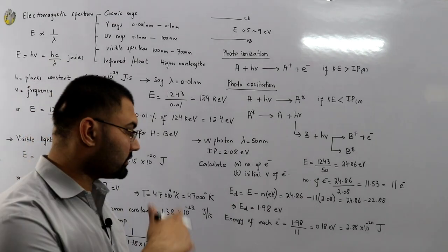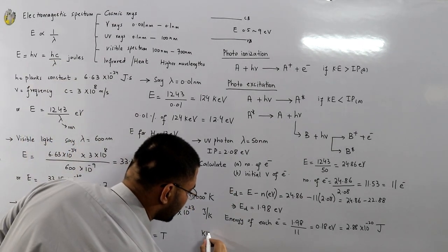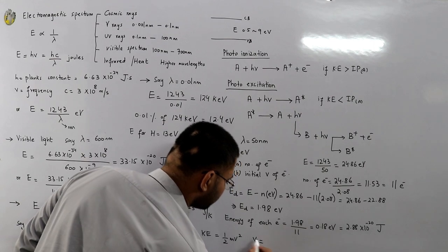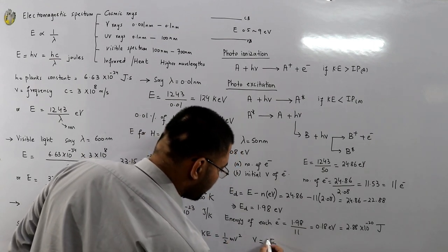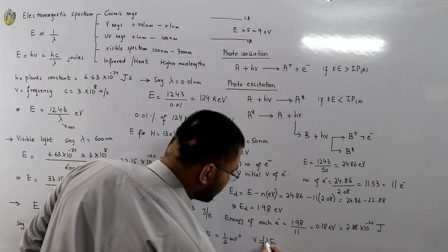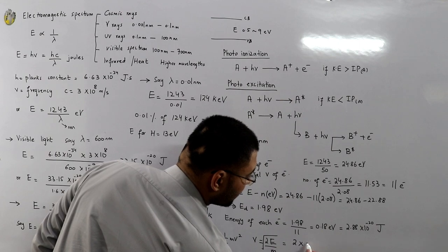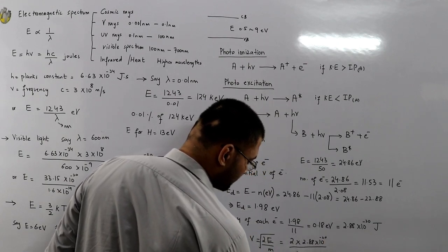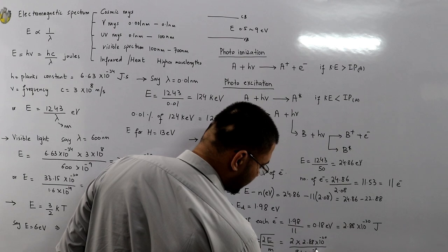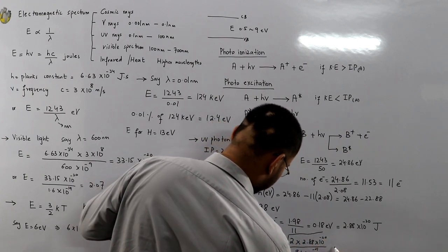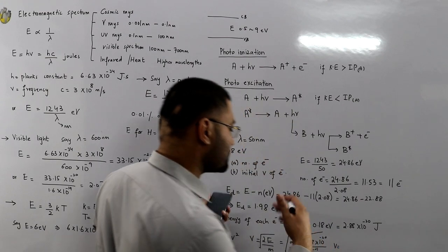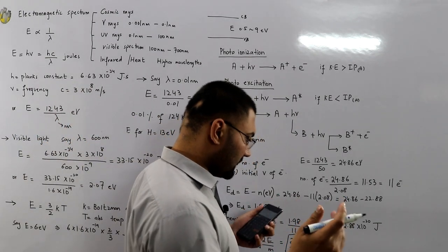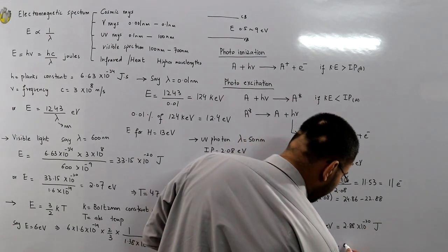This is the kinetic energy of each electron. From KE = ½mv², we get v = √(2E/m). Substituting: √(2 × 2.88 × 10⁻²⁰ / 9.1 × 10⁻³¹ kg). The velocity comes out to approximately 2515 something, which we write as 0.25 × 10⁶ meters per second.